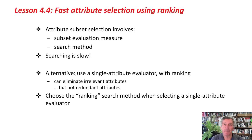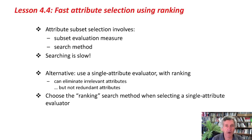We're going to look in this lesson at fast attribute selection using ranking. Remember before, in the last lesson, we looked at attribute subset selection, which involves a subset evaluation measure and a search method. We were looking for rapid subset evaluation methods. The wrapper method is very slow, and we were looking for faster alternatives. But searching is slow, so we're not going to do any searching now. We're going to use a single attribute evaluator that evaluates each attribute individually, not a subset. The ranking search method doesn't really search — it just sorts them into rank order of the evaluation.